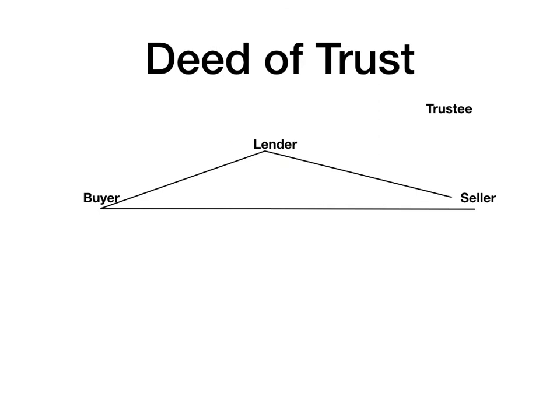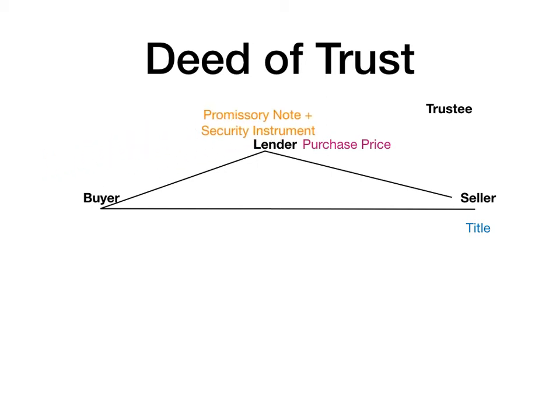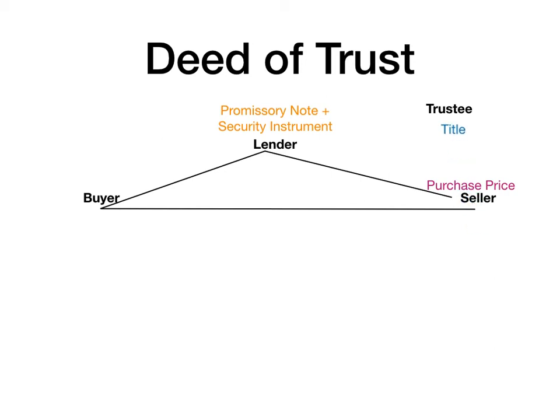Some states don't use mortgages — they use deeds of trust. The documents are very similar, but there is a legal difference that affects how foreclosures are done. In a deed of trust state, the lender still supplies the purchase price and the buyer supplies a promissory note and a security instrument, but rather than give the lender the title, the seller gives the title to a third-party trustee.